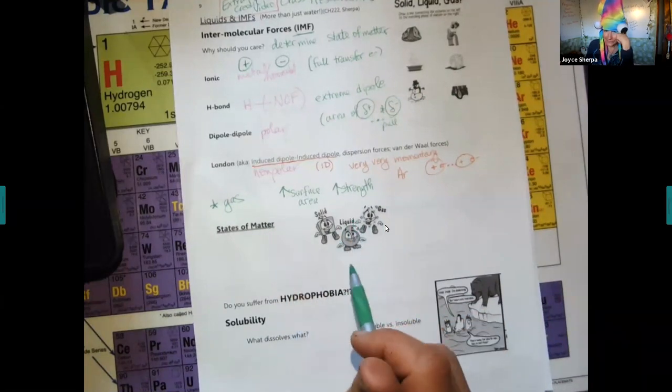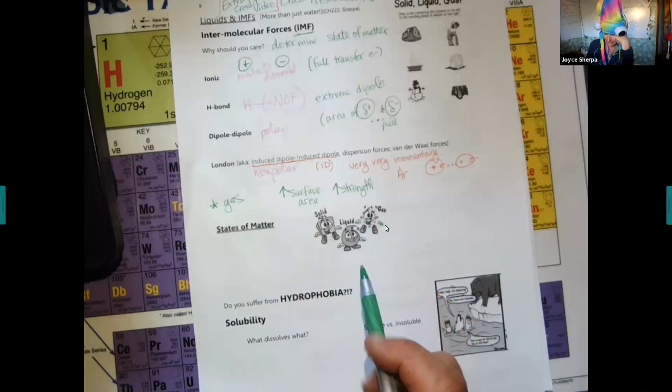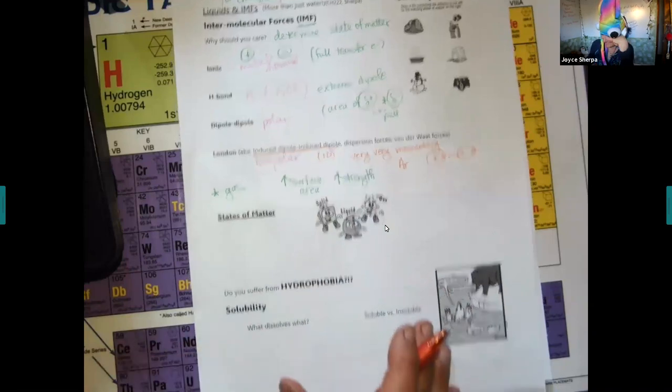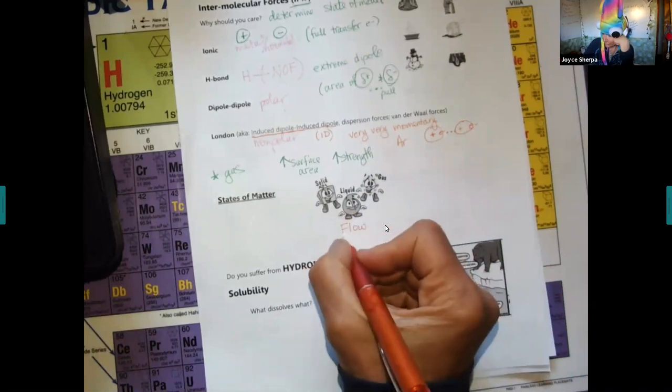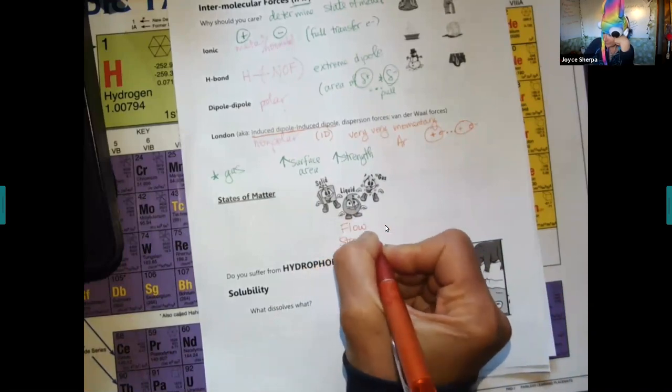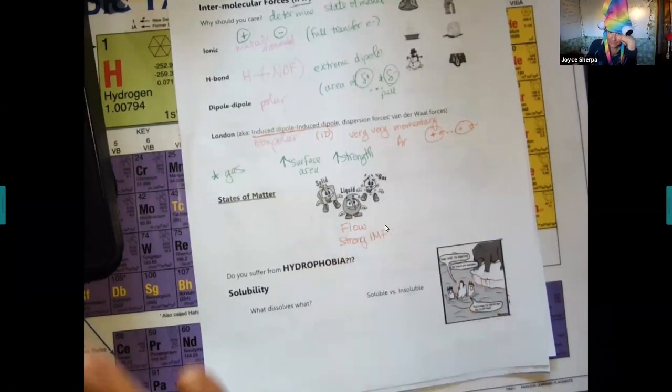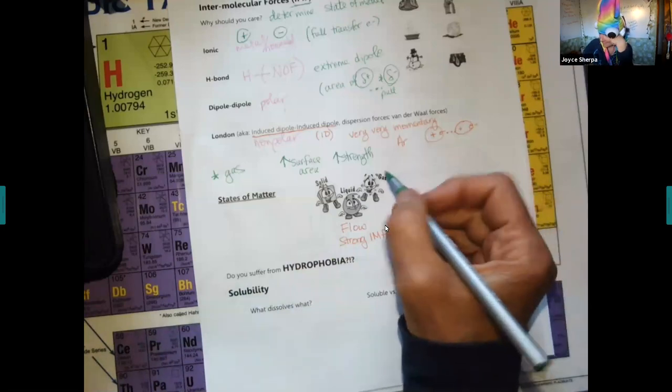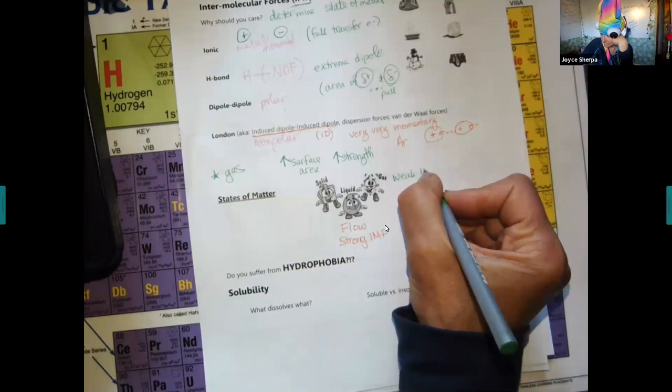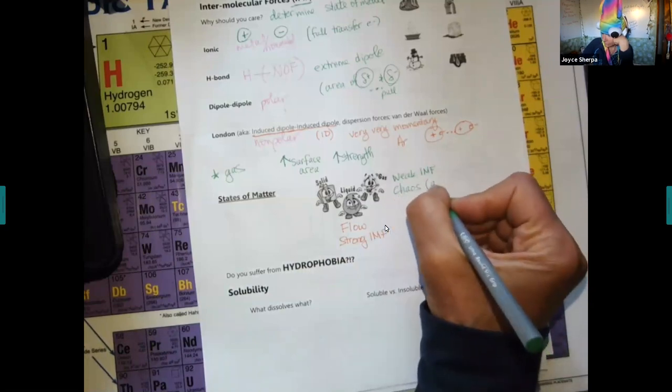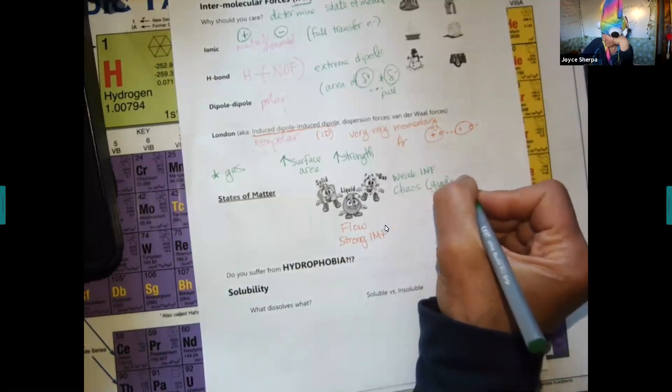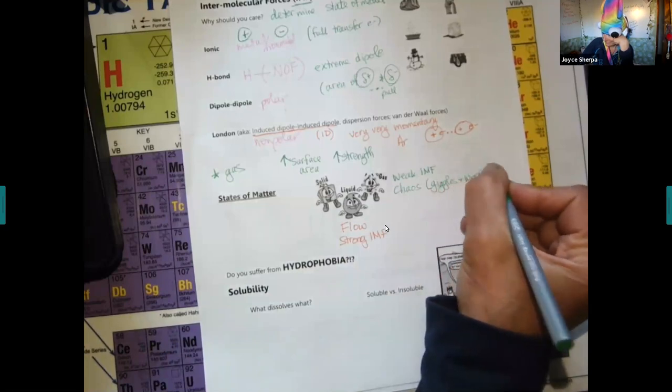Let's see if you got it. What's the key about gases that make them special? How about the key for liquids? Flow. They're fluids. They have strong IMF. This is why we do IMFs with liquids. Every book, when they teach IMF, it's with liquids. Gases have weak IMFs because they have giggles and jiggles because they're chaos.